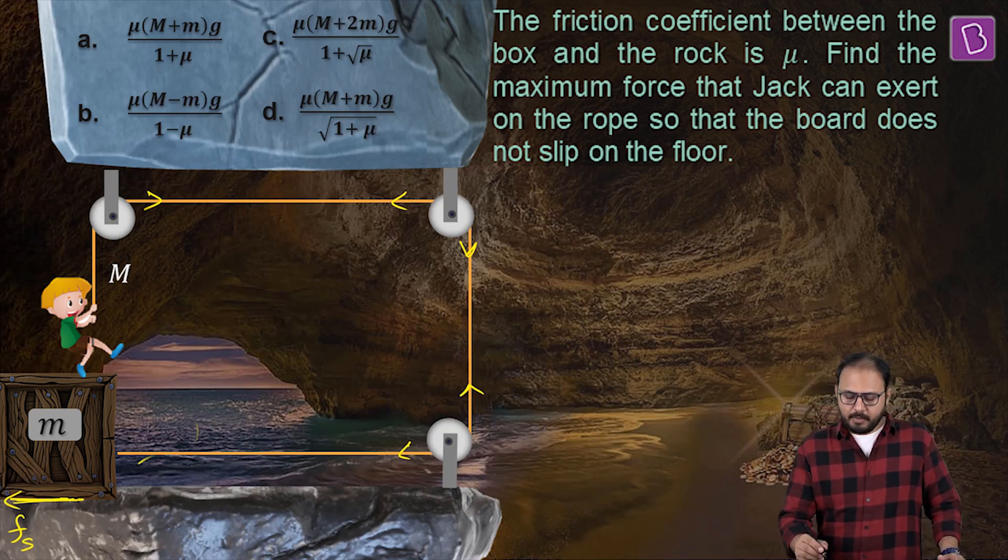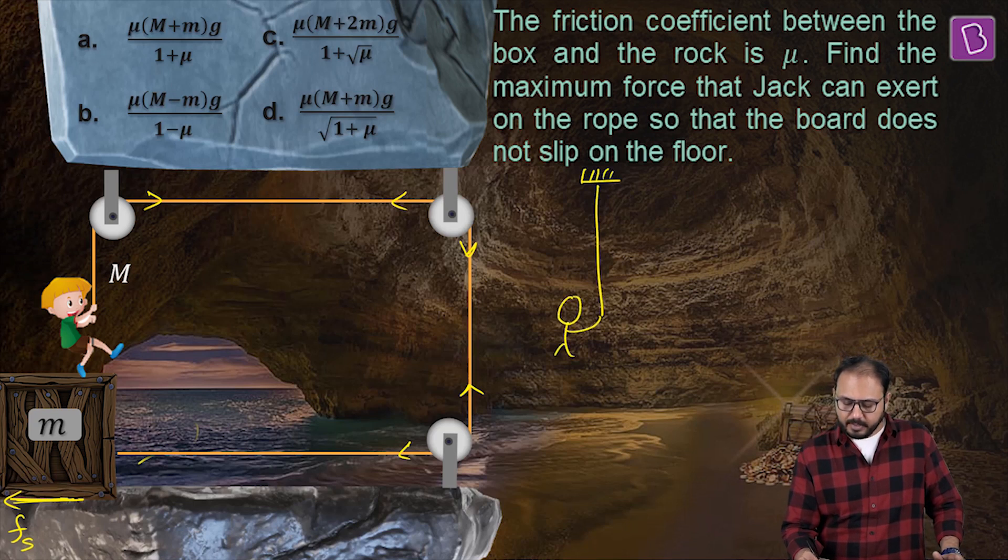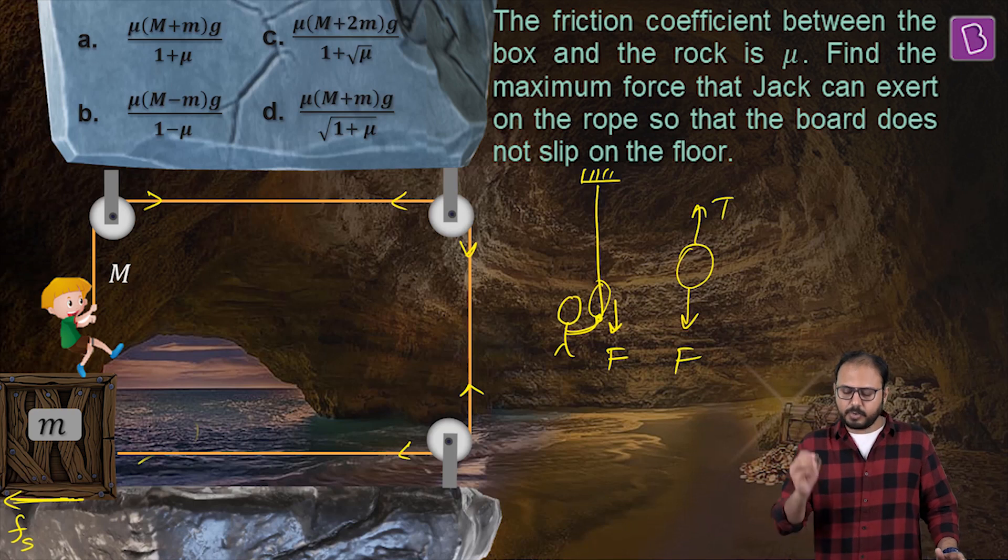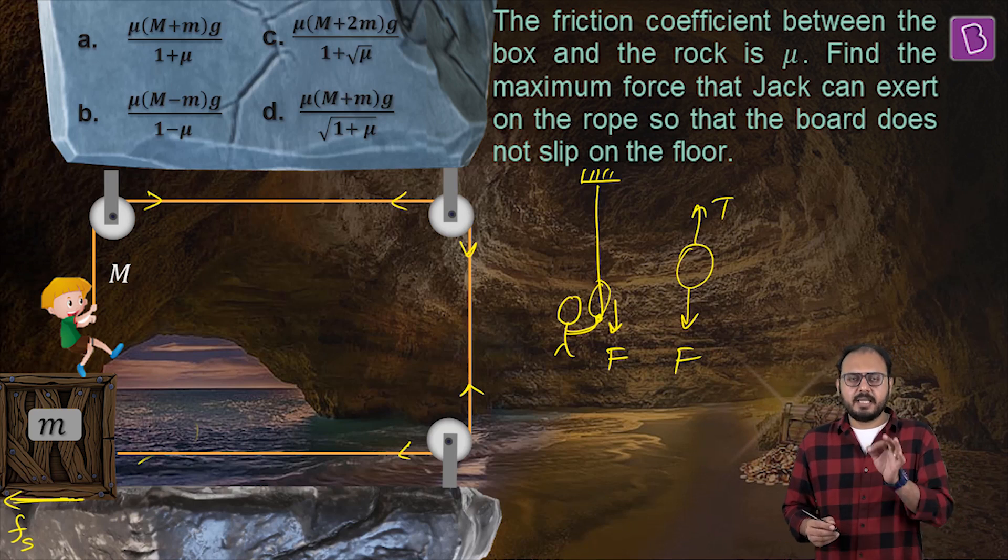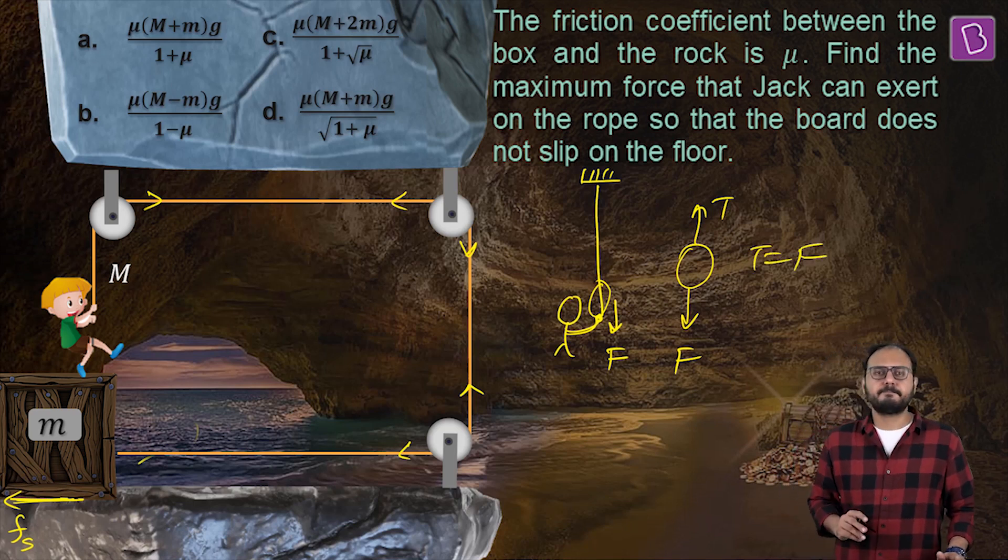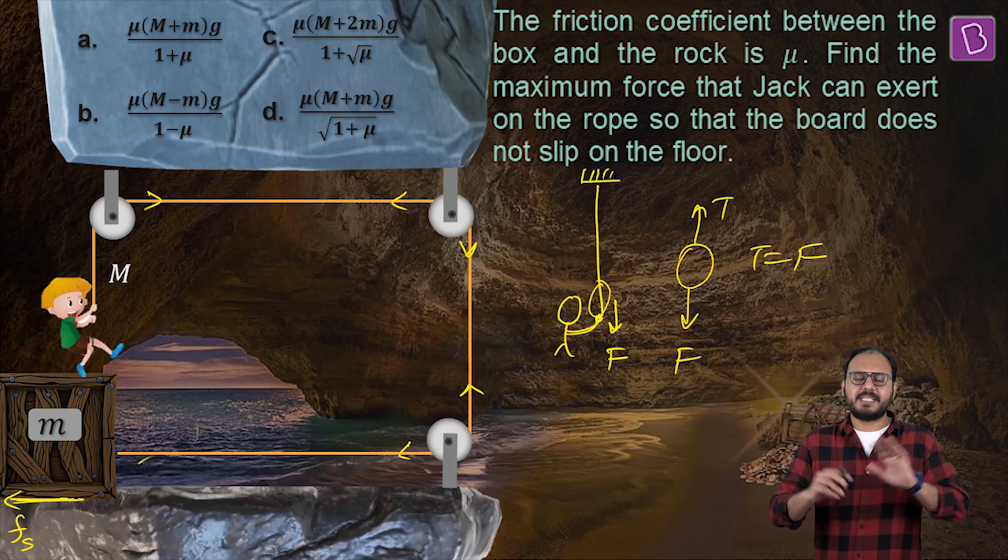Point number two. Whatever force Jack pulls the string with is nothing but the tension force. Why? Because the string is massless. I told you, if this is a string hanging and you pull the string down with a force F, then if you draw the free body diagram of a very small part of the string, you are pulling it down with F and the tension force is pulling it up. But it's massless. And I told you, when a body is massless, the net force on that massless body is always zero. That implies T is equal to F.